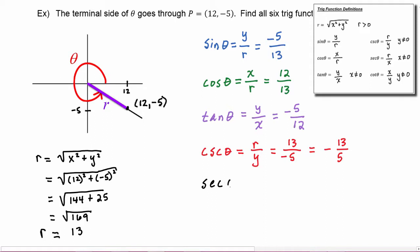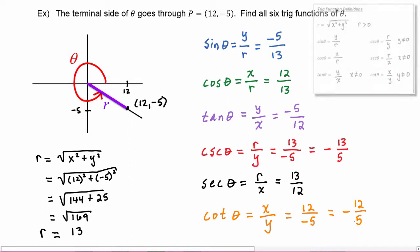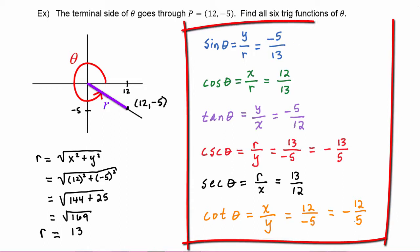Secant of theta is r divided by x, so we get 13 over 12. And finally, cotangent of theta is x divided by y, which equals 12 divided by −5, or as we noted, you can write that as −12 fifths. And there are the six trig functions of theta.